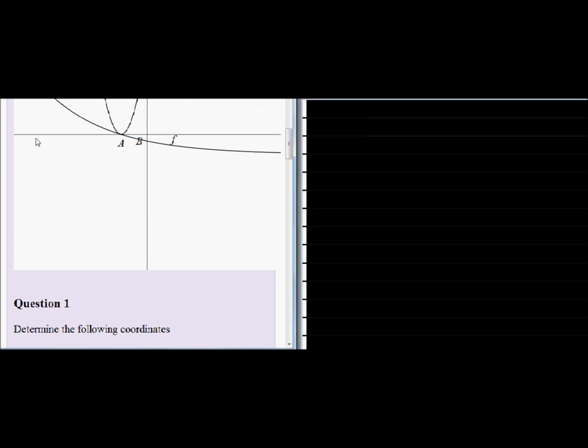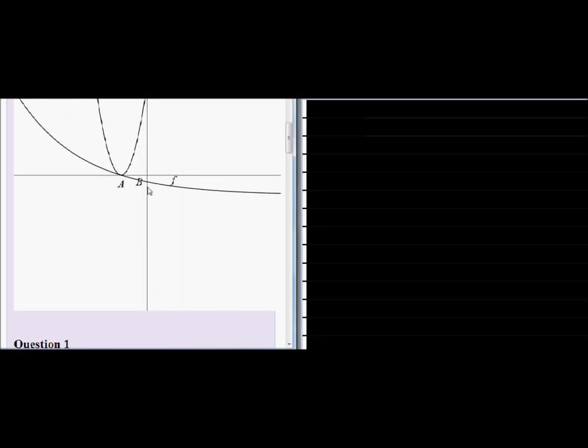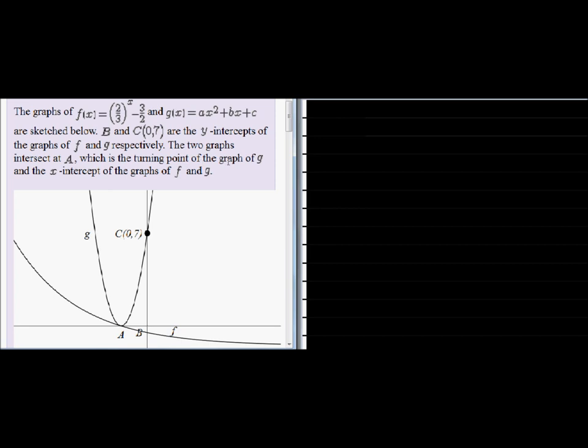So let's go look at the questions. The first question: determine the following coordinates, the coordinates of A. Okay, and the coordinates of B, the y-intercept. Okay, so we can see that A is the turning point of g, but we have no information about g really.